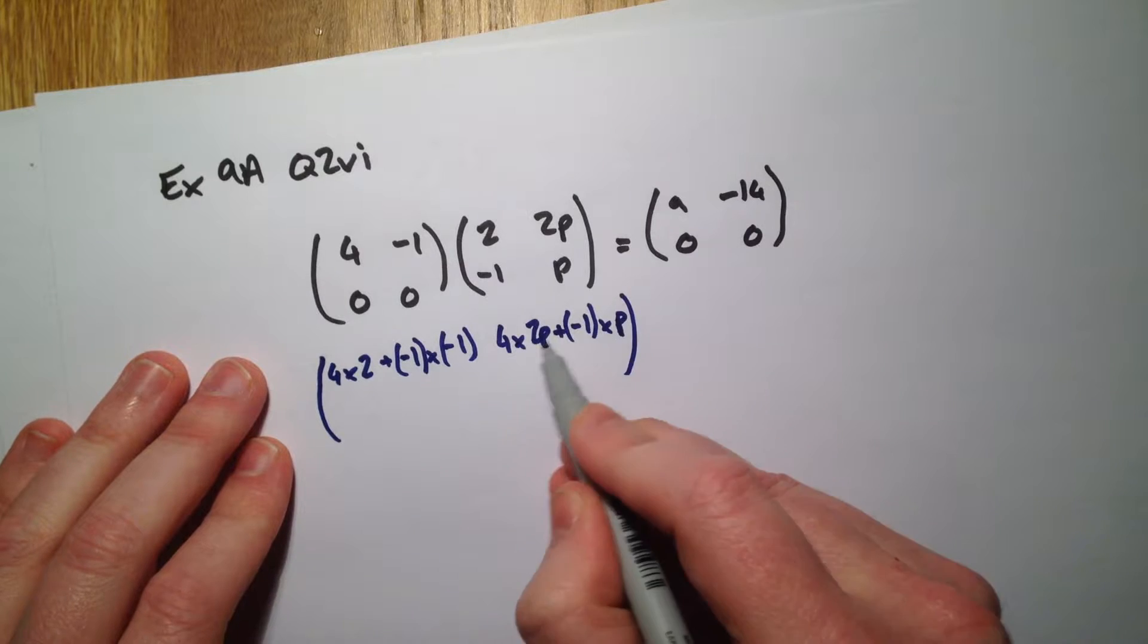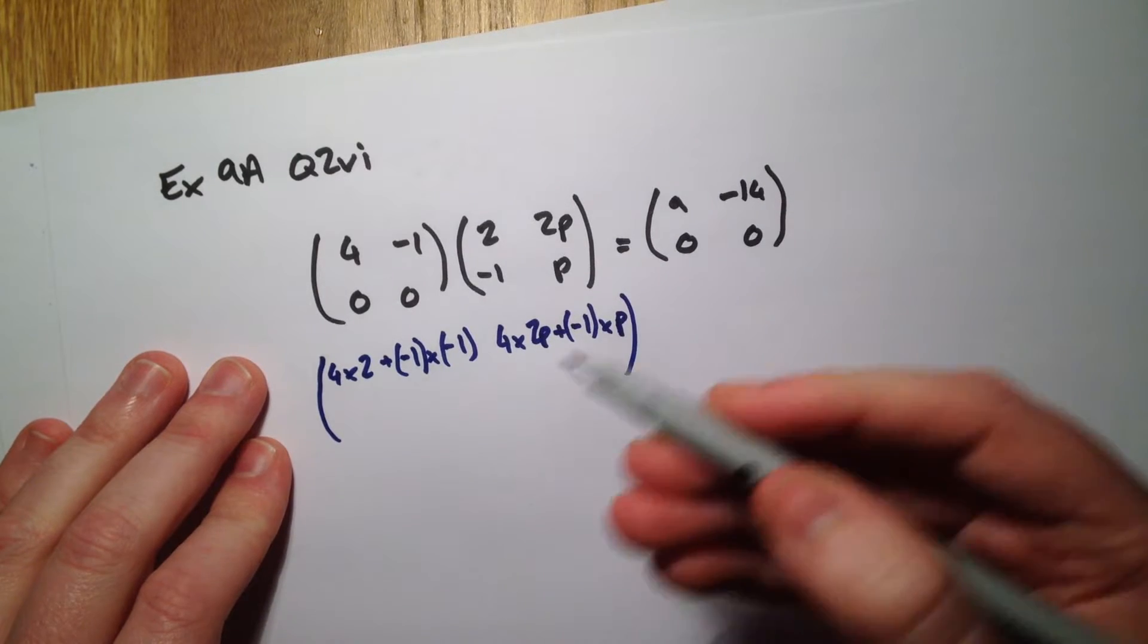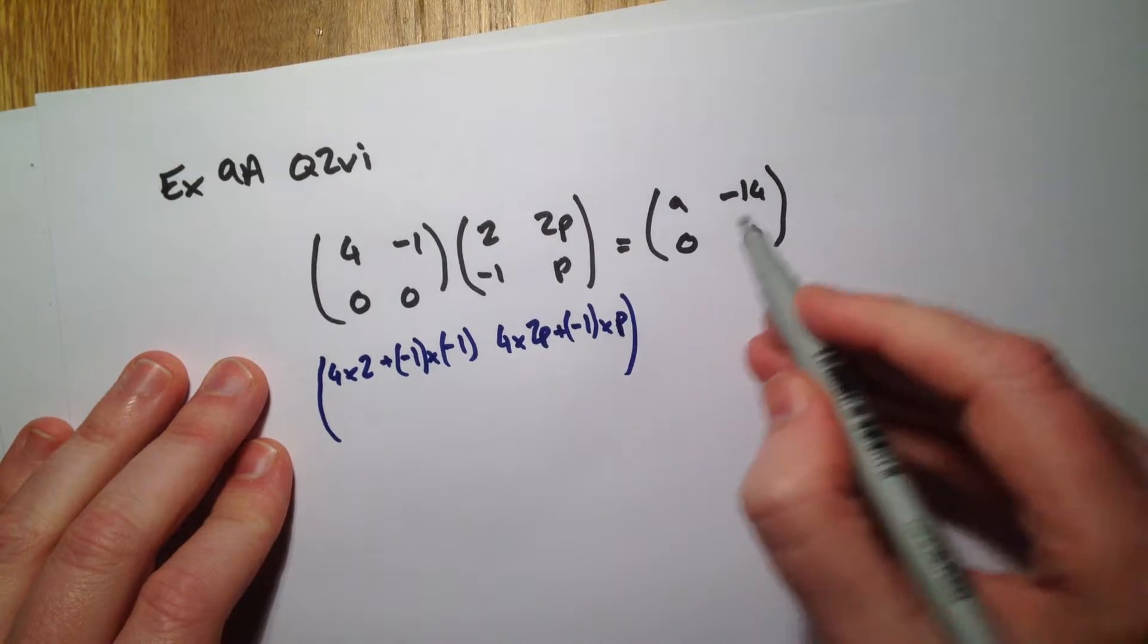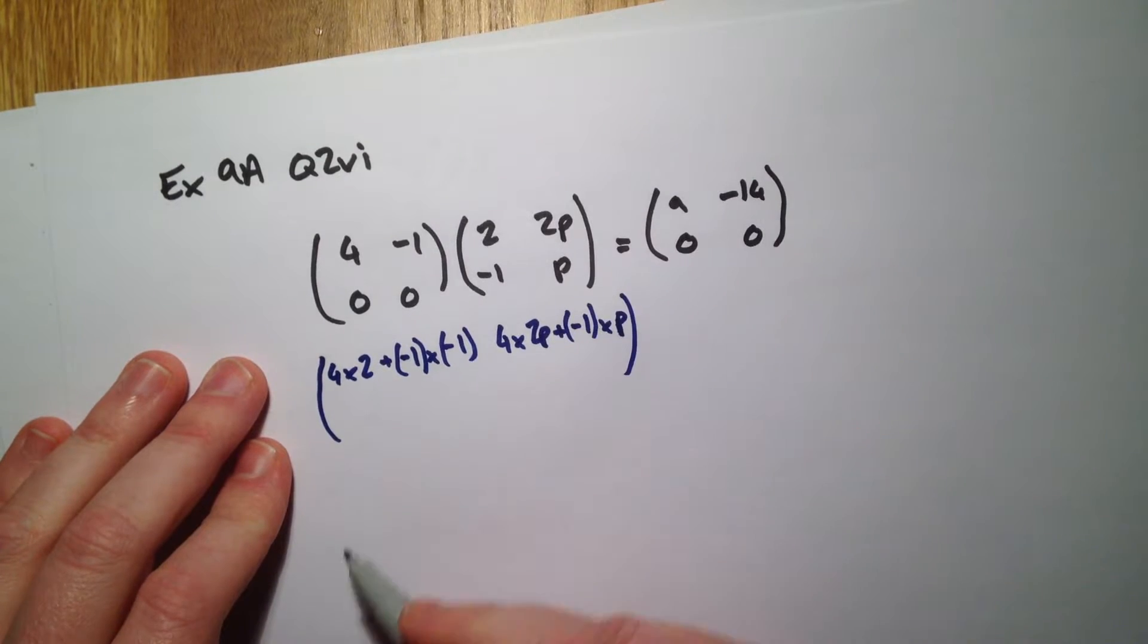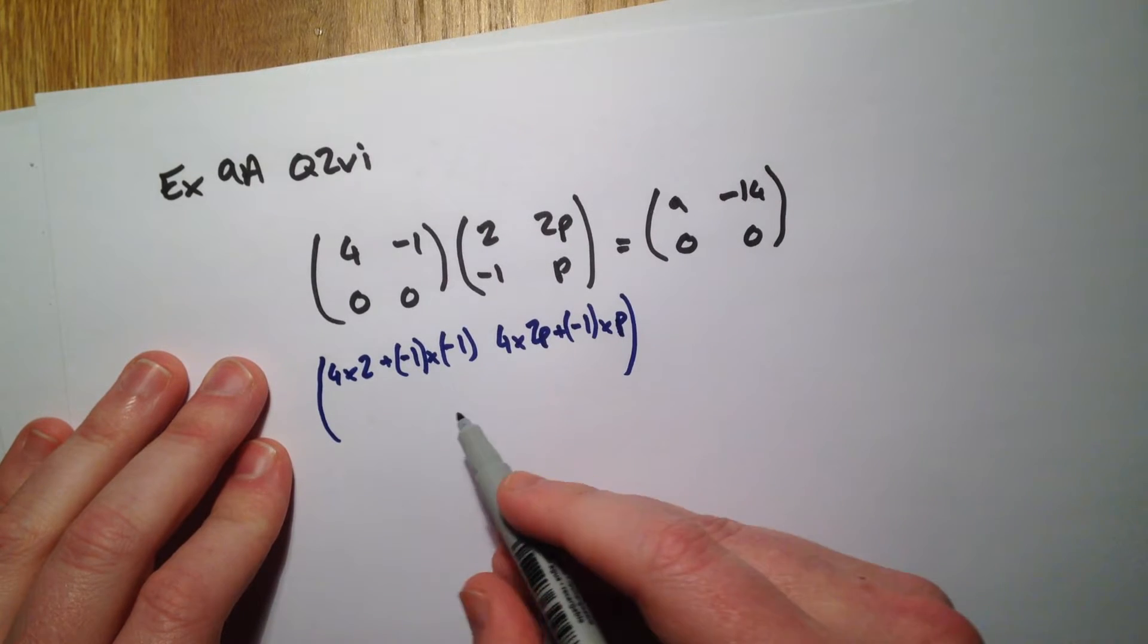Now I suppose really, given that we've got an amount of p here and we know that's going to come to 14, we could stop there. I'm just going to do the whole question here, but we know that this is going to come to negative 14, so really if you were in a rush you could just do this bit of the calculation.